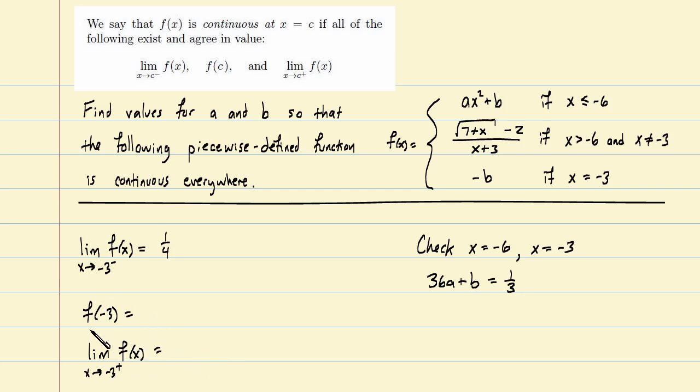Looking at this one, which piece applies when x equals negative 3? Well, that's handled explicitly here. We should get out simply negative b. And jumping down to this last one, what happens in f as x approaches negative 3 from the right? Which piece applies? Well, again, it's not equal to negative 3. We're just to the right of negative 3, so it looks like this piece applies again.